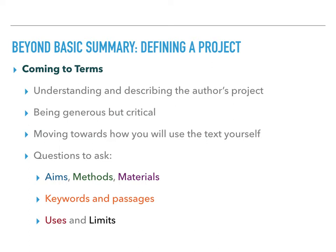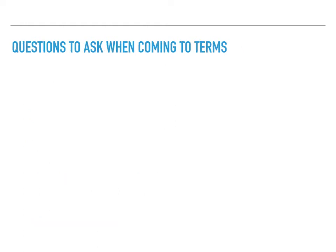So there are six different sets of questions, and you're going to want to make sure you really learn these terms as we're going to return to them throughout the semester. They are: aims, methods, materials, keywords and passages, and uses and limits. The first thing we're going to think about when we're defining a project and coming to terms with it are the author's aims. Harris uses the word 'aims' in part because it points out that what an author is trying to do and what they actually succeed at doing can be slightly different.